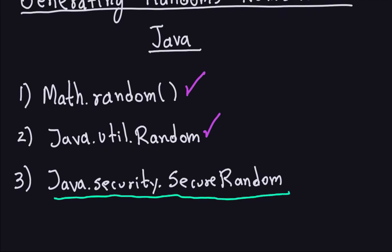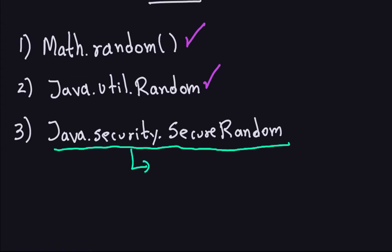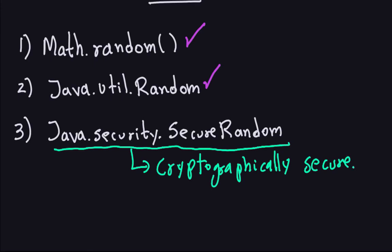SecureRandom is very important because it is cryptographically secure. What that means is it produces pseudorandom numbers with the explicit property that they are unpredictable — if you have information about the previous numbers, you won't be able to predict in reasonable computational time what the next one will be.